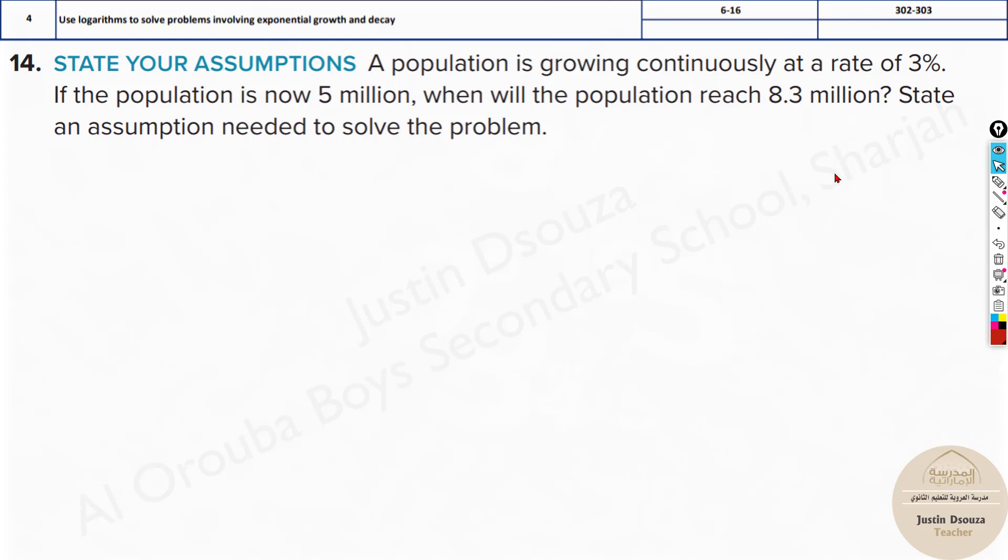I will start solving from 14 onwards. If you have watched the previous questions in that video, you will find this very easy. Let's solve this out. A population is growing continuously at a rate of 3%. If the population is now 5 million, when will the population reach 8.3 million? State an assumption needed to solve the problem.